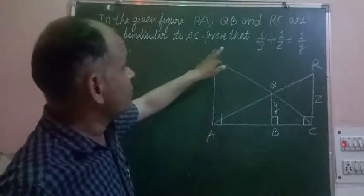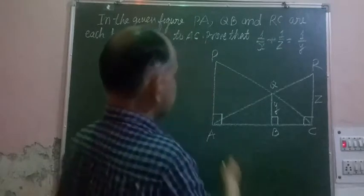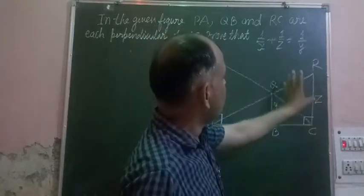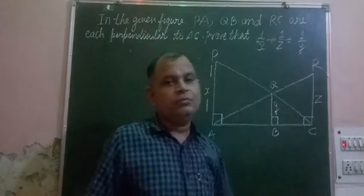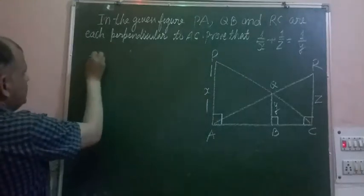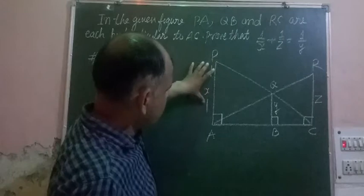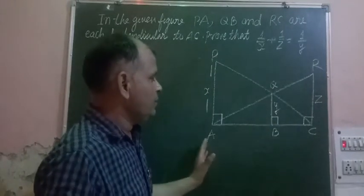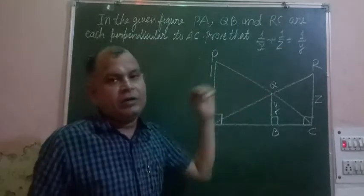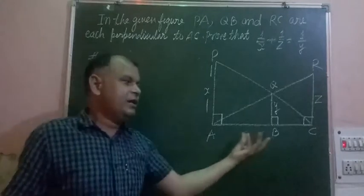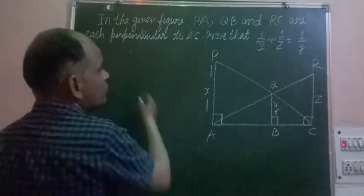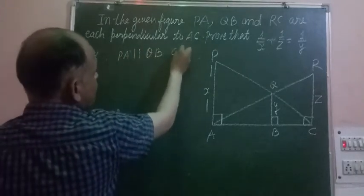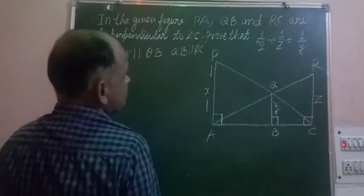Now, PA is perpendicular to AC and QB is perpendicular to AC, so these lines are parallel to each other because they are at the same base. So PA is parallel to QB, and QB is parallel to RC.